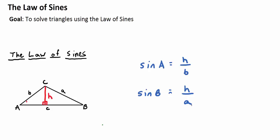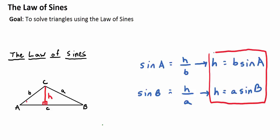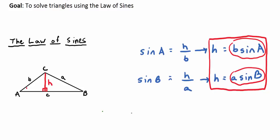Solve both statements for H. From the first statement, sine A = H/b, so H = b·sine A. From the second, H = a·sine B. Now we have two equations both equal to H, so the right sides must be equal: b·sine A = a·sine B. That's one version of the Law of Sines, though you won't see it written that way in most books.